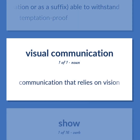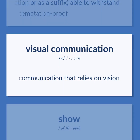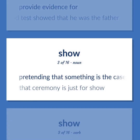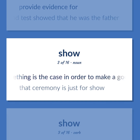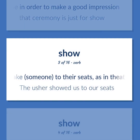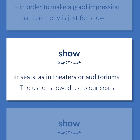Show: Communication that relies on vision. Provide evidence for — the blood test showed that he was the father. Pretending that something is the case in order to make a good impression — that ceremony is just for show. Take someone to their seats, as in theaters or auditoriums — the usher showed us to our seats.